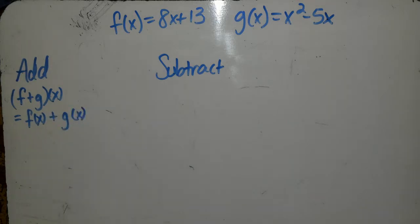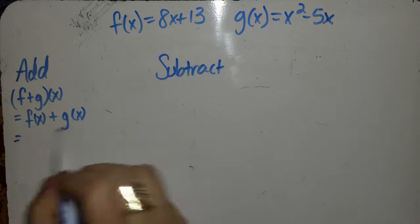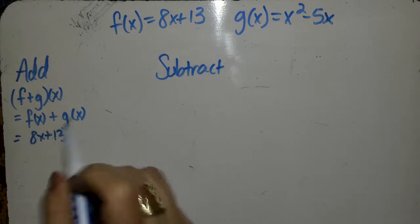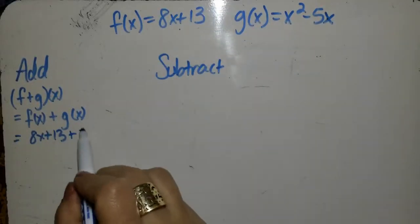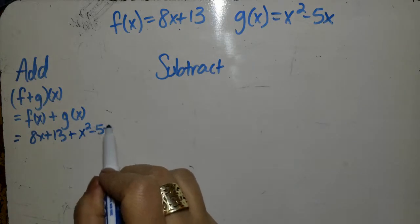And so when I do that, f of x is 8x plus 13, plus g of x, which is x squared minus 5x.